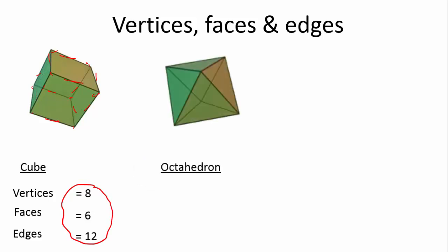Let's now have a look at our octahedron — vertices, faces, and edges. How many vertices does it have? Counting: one, two, three, four, five, and six — so it has six vertices. How many faces? There are four on top and four on the bottom, so it has eight faces. How many edges? Four on top, four on the bottom — that's eight — plus four more middle edges gives twelve edges.